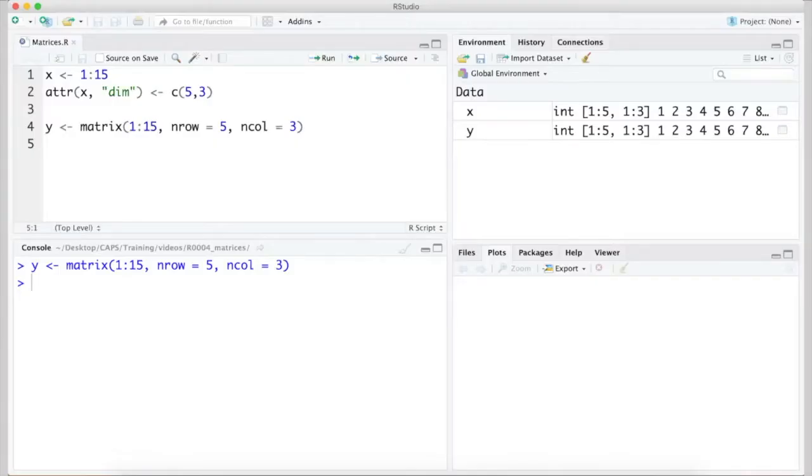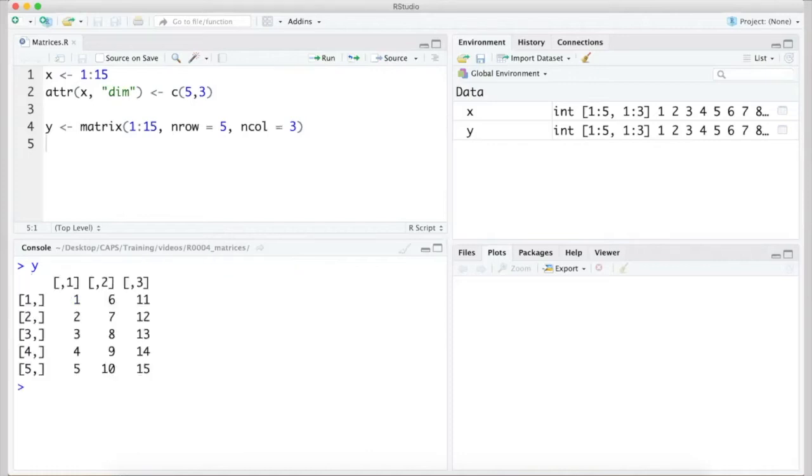Here, I'm using the matrix function to construct a new object, Y, which we can see is the same as the matrix we previously created by adding the dimension attribute to the vector.